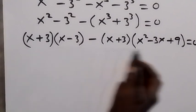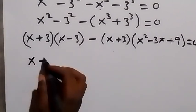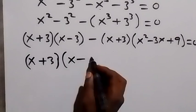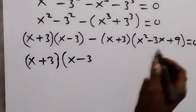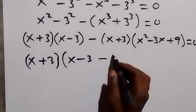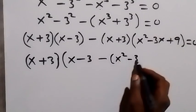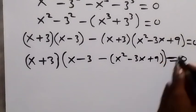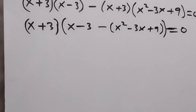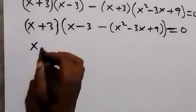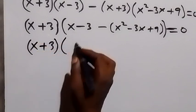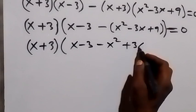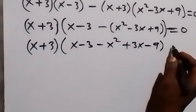We have (x + 3) to be common here, so let's bring it out. We have (x + 3) common, then what is left: we have (x − 3), then minus into bracket x squared minus 3x plus 9, which equals 0. Expanding what is in the bracket, we have (x + 3) multiplied by bracket x minus 3, then minus open bracket minus x squared plus 3x minus 9, which equals 0.